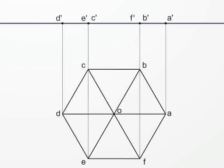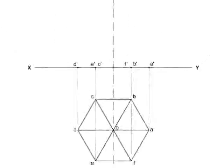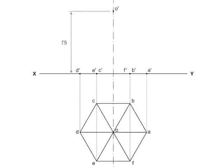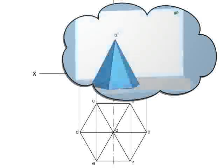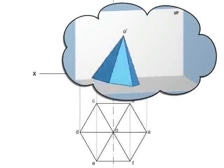Locate the point O dash at height 75 millimeter from XY line on the vertical center line and connect all the points to the center O dash. Now we will consider the elevation of the pyramid such that the apex is on the XY line.